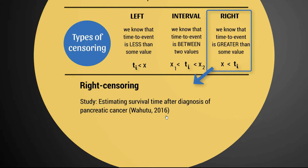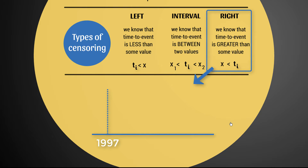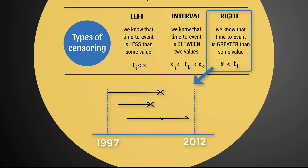Now I'm going to start with right censoring because that is the most common form. There's a study from 2016 by Wahutu where they're trying to estimate survival time after the diagnosis of pancreatic cancer — quite like the example I've been giving so far. The study period started in 1997 and went all the way to 2012, meaning people were enrolled if they were diagnosed with pancreatic cancer at any point throughout that period.